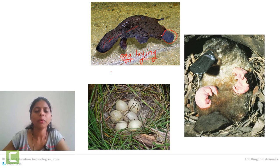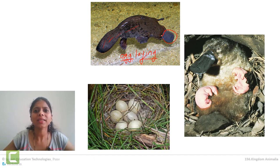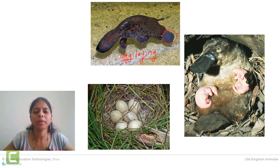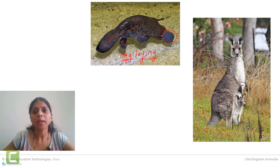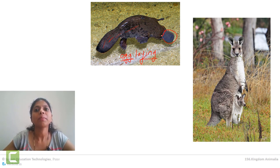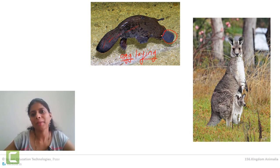Another type of mammal — for example kangaroo — is called marsupial mammals. Marsupial mammals are provided with a sack-like structure called a pouch on their abdomen. A very small baby is born, and then that baby finds its way into the pouch which is present on the abdomen.